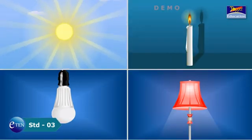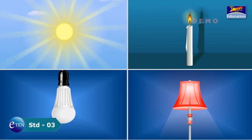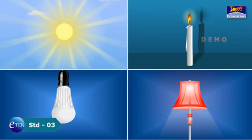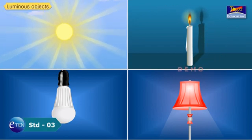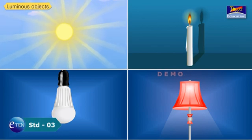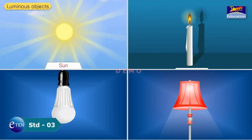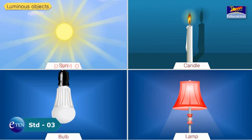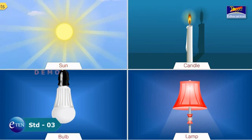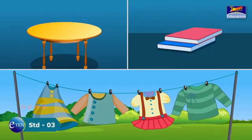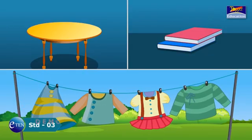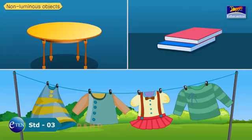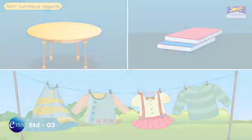Objects that give us light are called luminous objects. Examples are the sun, candle, lamp, and bulb. Objects that do not give light are called non-luminous objects.